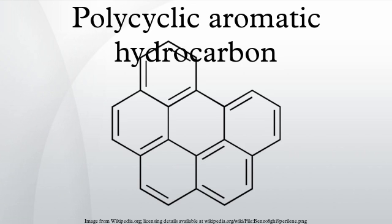PAHs composed only of six-membered rings are called alternant PAHs, which include benzenoid PAHs. PAHs containing up to six fused aromatic rings are often known as small PAHs, and those containing more than six aromatic rings are called large PAHs. The bulk of research on PAHs has been on small PAHs due to their availability. Large PAHs are found as combustion products, but at lower levels than small PAHs.